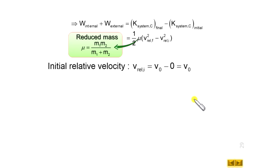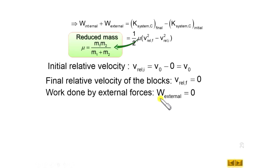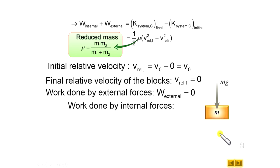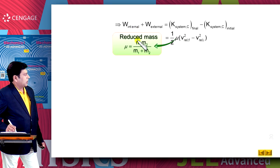When relative sliding stops, the trolley and block move with the common velocity, so the final relative velocity equals zero. Since there is no external force on the system, work done by external forces equals zero. The one internal force acting is kinetic friction. From the free body diagram: weight acts downward, normal reaction equals mg upward, and friction force equals μmg in the backward direction. So the kinetic friction force is μmg and the relative sliding distance is x, giving work done by kinetic friction as minus μmg·x.